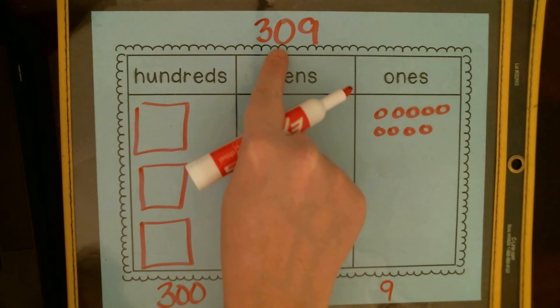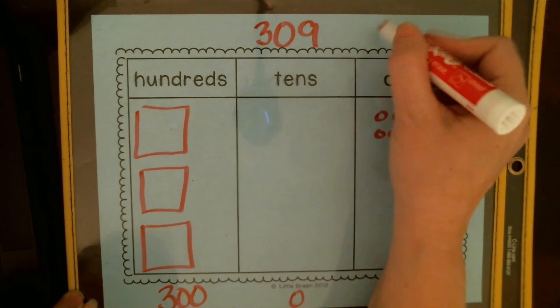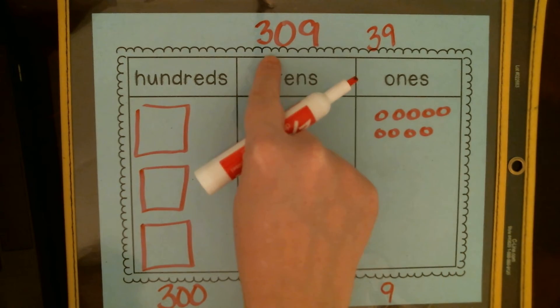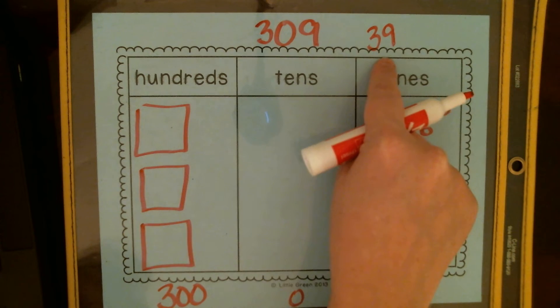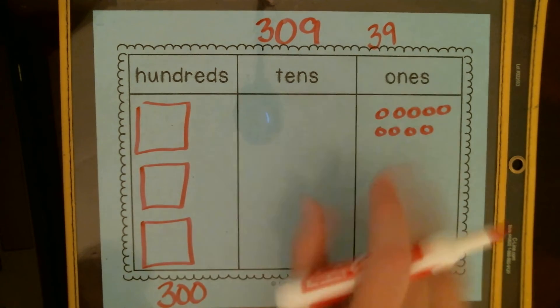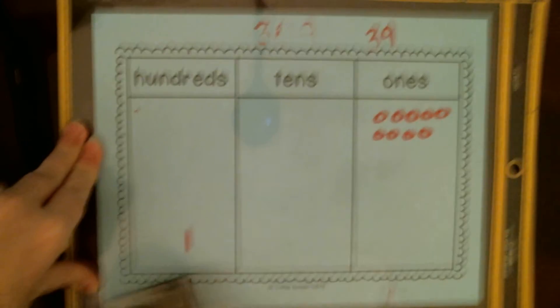Okay, that zero is really important to hold the place because if we didn't have the zero there, the number would be 39. We wouldn't write 309 as 39. No, it's 300 and nine ones. That's the number 309. Okay, zero is really important as a placeholder.